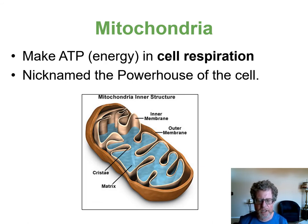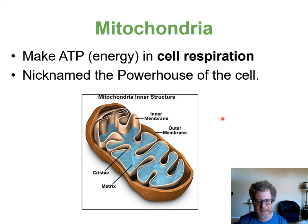Mitochondria are the powerhouse of the cell. When we're hungry we eat food; when plants need energy they build their own food. Both plants and animals take that food, break it down, and make it into energy in the mitochondria. The form of energy that cells use is a chemical form called ATP.